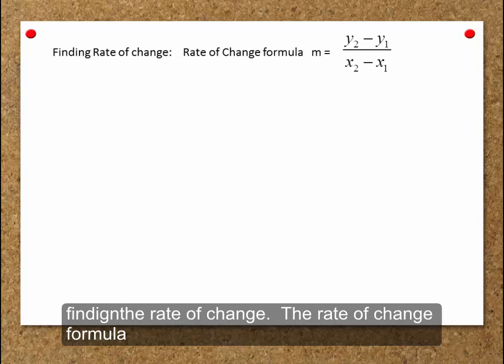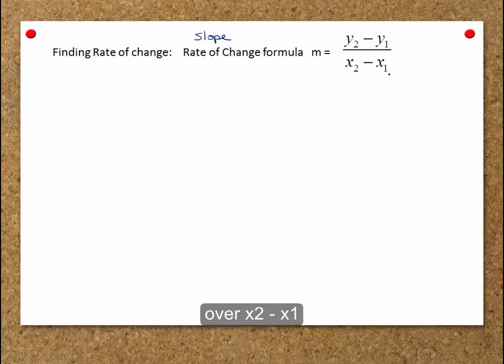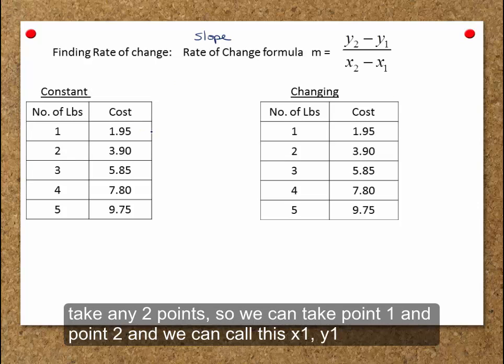Finding the rate of change. The rate of change formula is the same as the slope formula. So it's m is equal to y2 minus y1 over x2 minus x1. If we have a constant rate of change, we can take any two points.